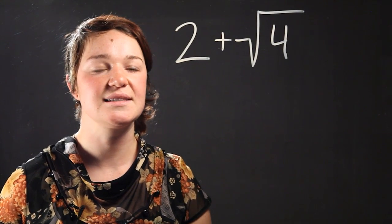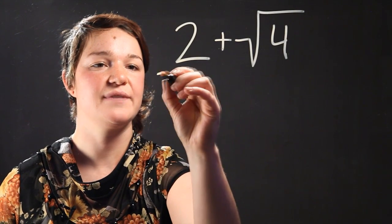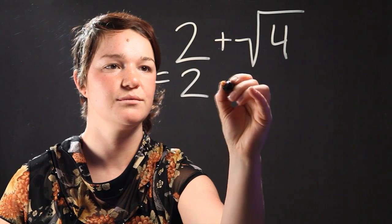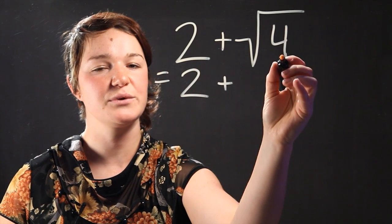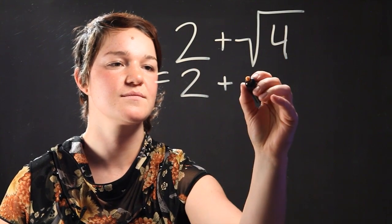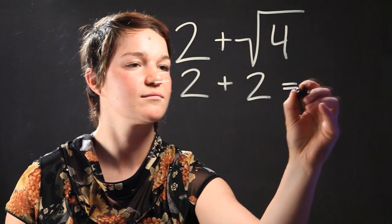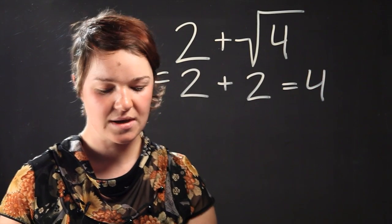Now this is very easy to simplify. This is going to simplify to 2 plus the square root of 4 is 2. So 2 plus 2 is 4. So there you have it.